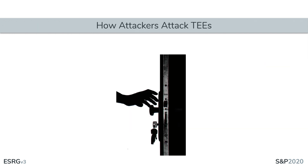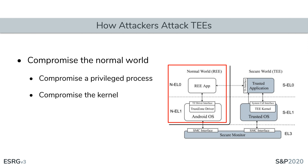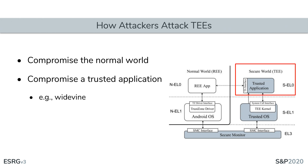Now let's see how attackers might exploit these vulnerabilities. An attack typically starts from the normal world. To communicate with the secure world, the normal world often implements a device driver, which may be exposed to all applications or implement a whitelist. An attacker wants access to this driver — they may be able to do so from any application, but more likely will need to compromise a privileged process, such as the media server in Android, or gain kernel access in any way possible, ultimately gaining access to the communication driver.